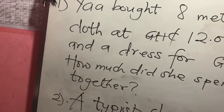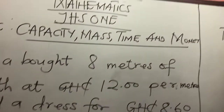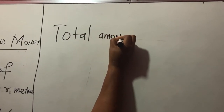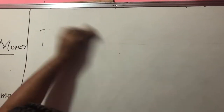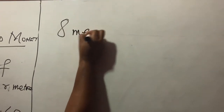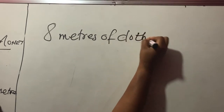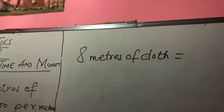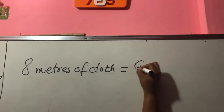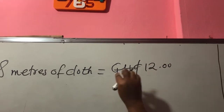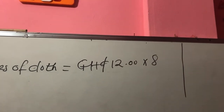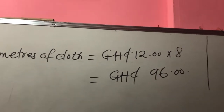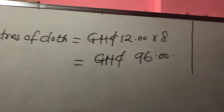So what you have to write — and this is mathematics where you have to write a little English — you write: eight meters of cloth equals 12 Ghana cedis times eight meters, which is 96 Ghana cedis. That means her eight meters of cloth is costing 96 Ghana cedis. Have you finished with the question? No. After she made this payment of 96 Ghana cedis, she realized that the woman has a very nice dress in the shop. She asked the lady how much the dress cost, and the lady says the dress costs 8 cedis 60 pesewas.